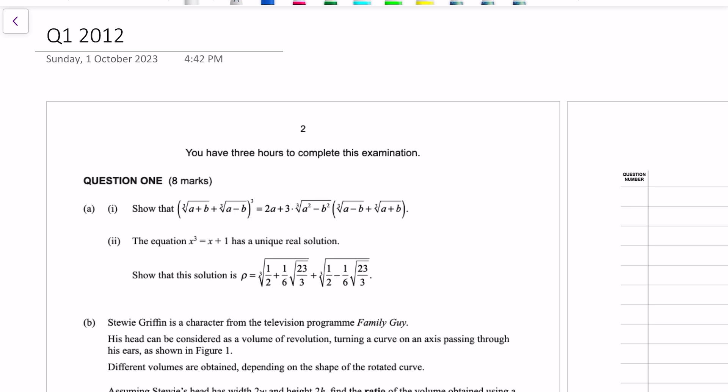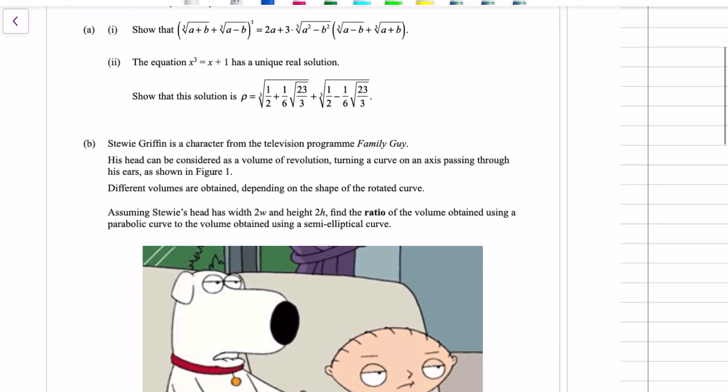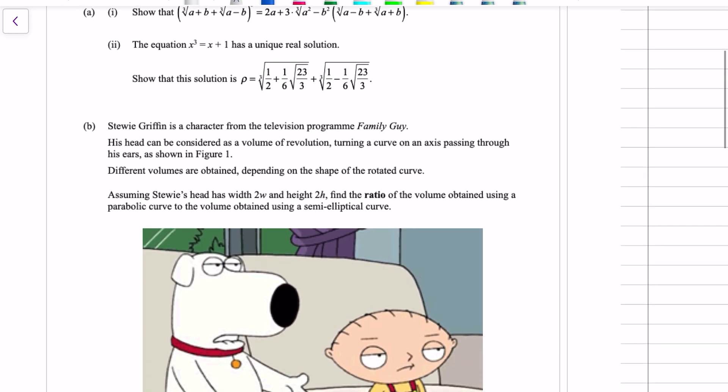Okay, so first up we've got this identity that we need to prove, an algebraic identity, which flows on to the next question. And then the second part, we're revolving Stewie Griffin's head around the x-axis.